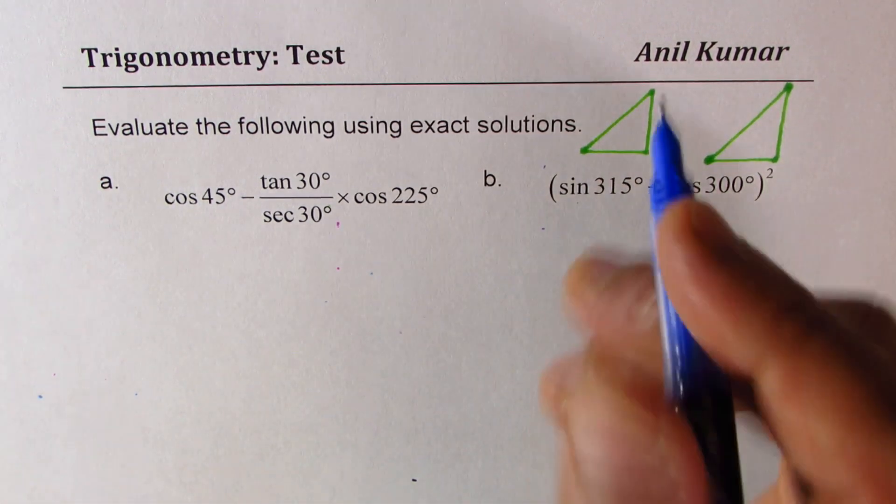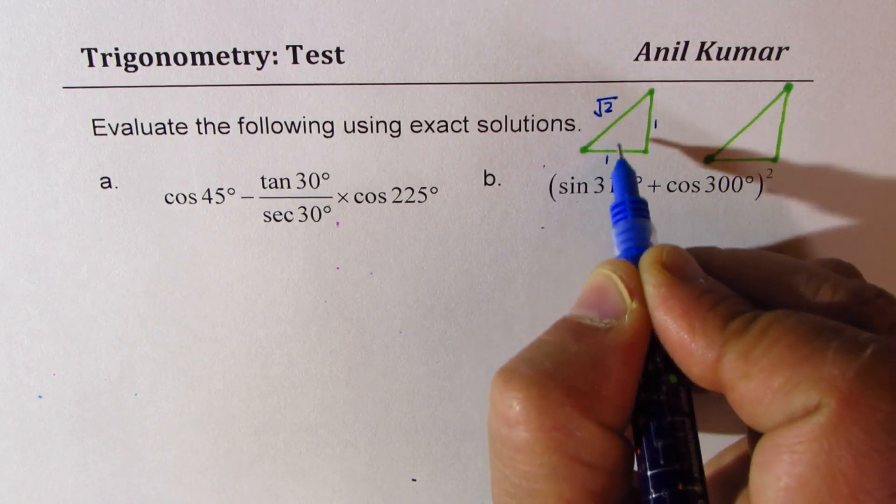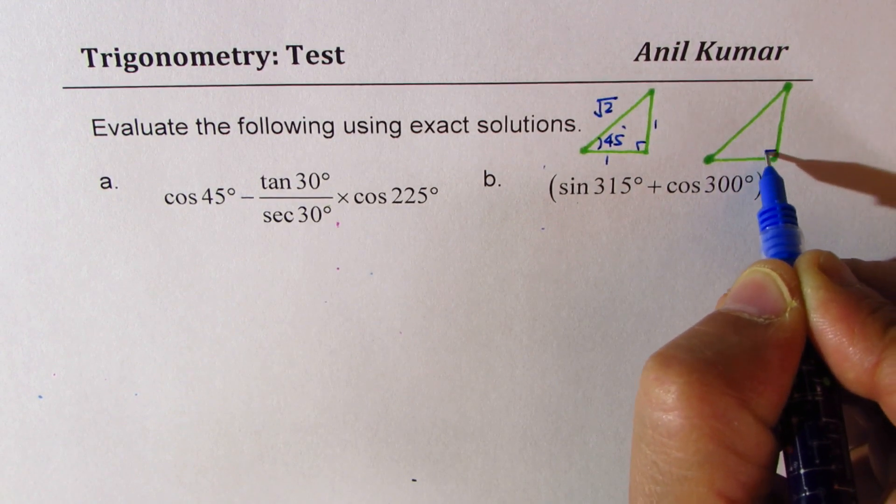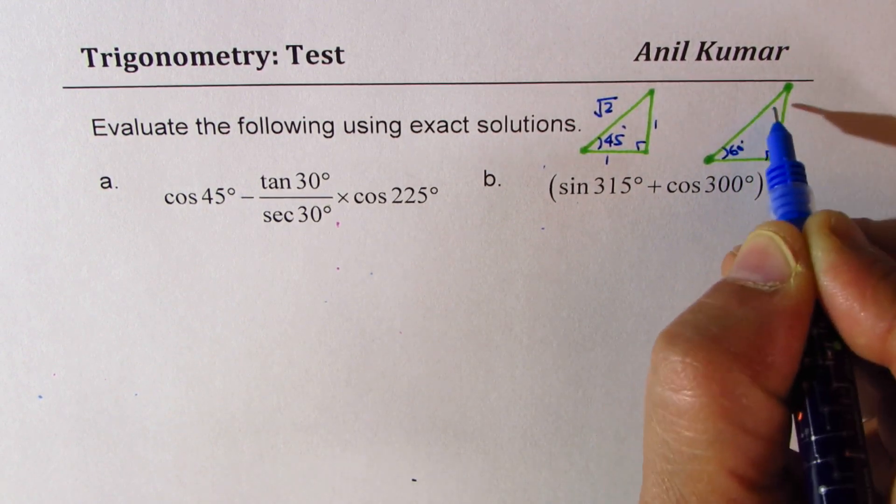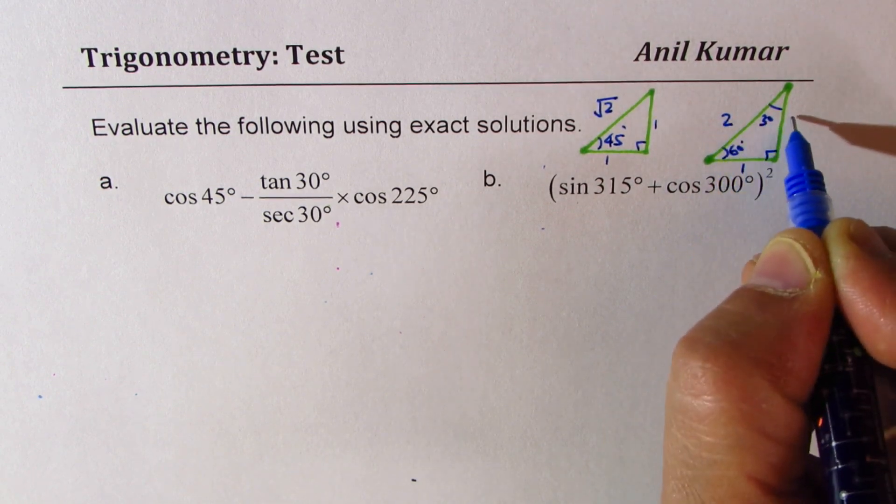The sides for 45 degrees are 1, 1, square root 2, and for 30-60-90 they are 1, 2, square root 3.